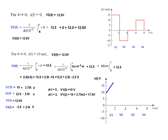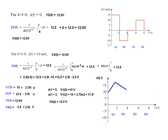For the first segment, putting T = 0 in V1 gives 10 V as the starting point. At T = 2, V1 = 17.5 V, so we draw a line from 10 to 17.5. For V2, the starting point is already 17.5, so we only calculate the final point: putting T = 4 gives 22 − 5 − 10 = 12.5 V. We draw a line from 17.5 down to 12.5.